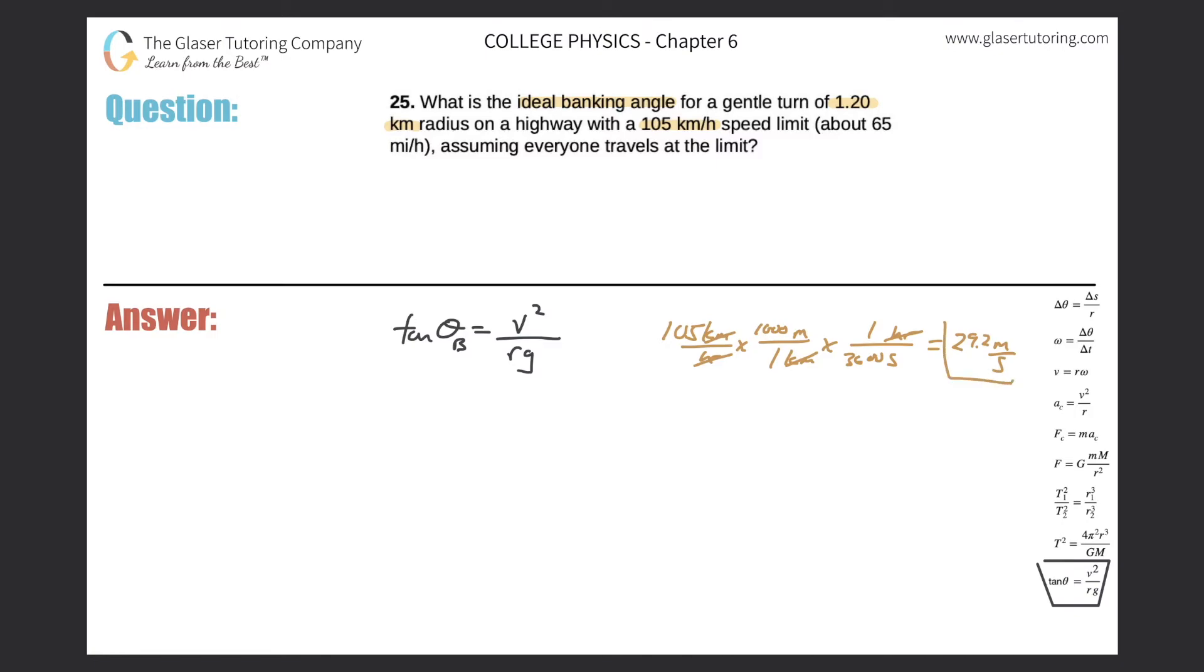We solved for v. Now the radius of the turn—it tells us it's a gentle turn, very gentle—of 1.2 kilometer radius. They did tell us the radius, but again, they gave it to us in kilometers, so let's just simply take that value, 1.20 kilometers, multiply it by a thousand, or simply move the decimal three places to the right. That would get you 1200 meters. So this is the radius.